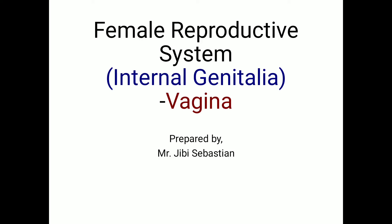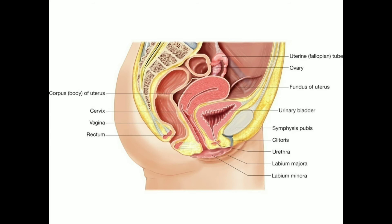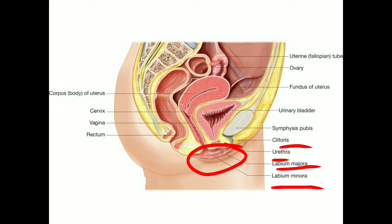Hi everyone, today we will discuss the female reproductive system internal genitalia. In the previous class we discussed about the external genitalia or the vulva, which consists of labia majora, labia minora, clitoris, urethral opening, vaginal opening. Today we will be discussing about the organs which are present within the pelvic cavity.